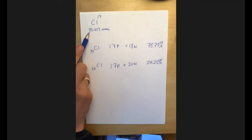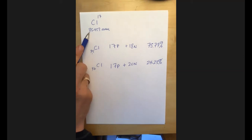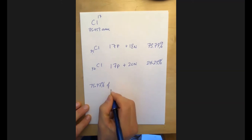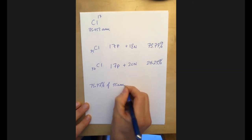So this number 35.453 seems reasonable based on these two percentages. But we can do the exact same calculation that we did before. Which is to say that 75.77% of chlorine has a mass of 35 AMUs.